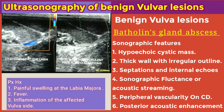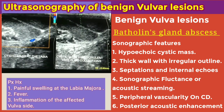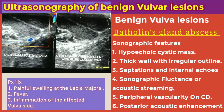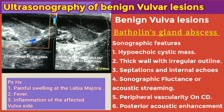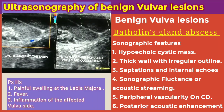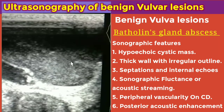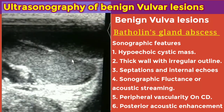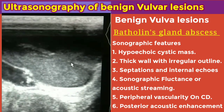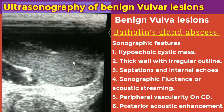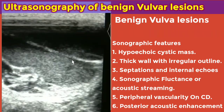This is the video demonstrating Bartholin's gland abscess on color Doppler interrogation. The walls are vascular and there is presence of septations. The arrow here is pointing at the acoustic streaming — the movement or sonographic fluctuance — which represents the movement of the purulent fluid.